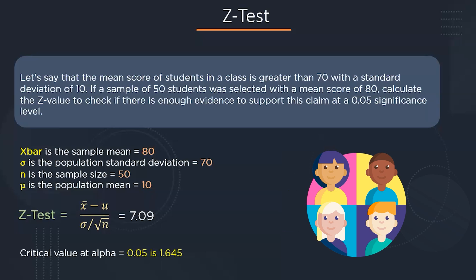Now, at the significance level of 0.05, the critical value is 1.645, which is calculated with the help of a Z-table. You can find this Z-table simply by searching on Google. Since 7.09 is greater than 1.645, we can reject the null hypothesis and conclude that there is enough evidence to support that the mean of the class is greater than 70. This is how you use the Z-value to arrive at a proper conclusion.